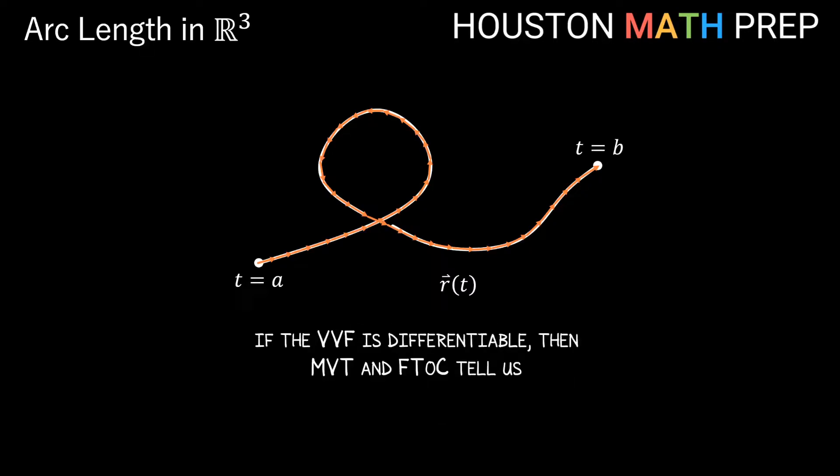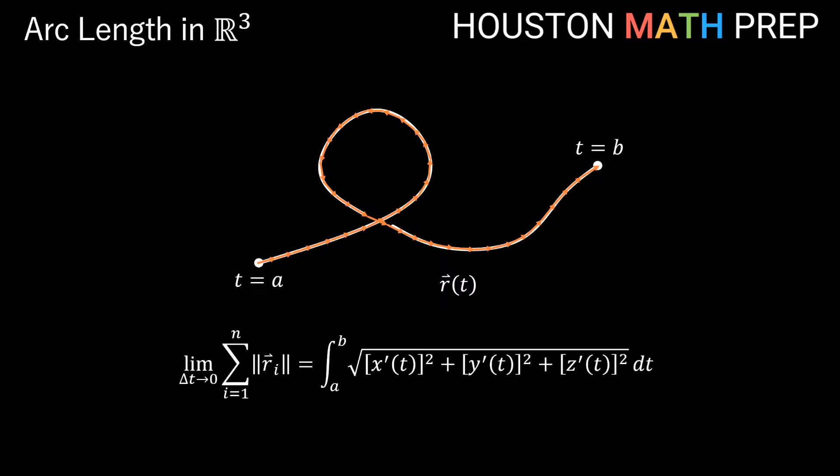The good news is that if our vector-valued function is well-behaved, in this case if it's differentiable on our interval from a to b, then the mean value theorem and fundamental theorem of calculus allow us to say that as we use shorter and shorter vectors, fitting more and more of them along this curve from a to b, then this is going to give us a definite integral with this formula you see here that looks a lot like the magnitude formula, only with derivatives in it.